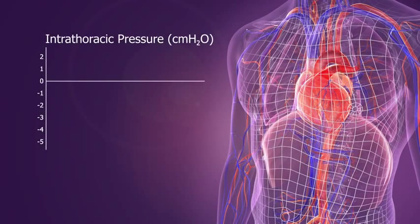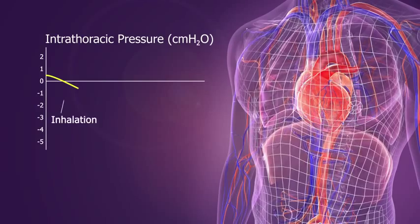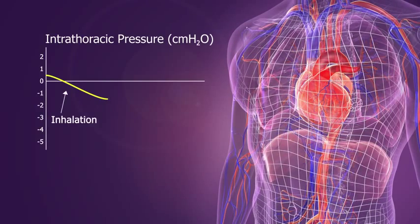Now let's talk about how intrathoracic pressure impacts circulation. When a healthy person at rest inhales, the diaphragm moves down and the chest wall moves out. This creates a vacuum that draws air and blood into the chest and slightly lowers ICP.